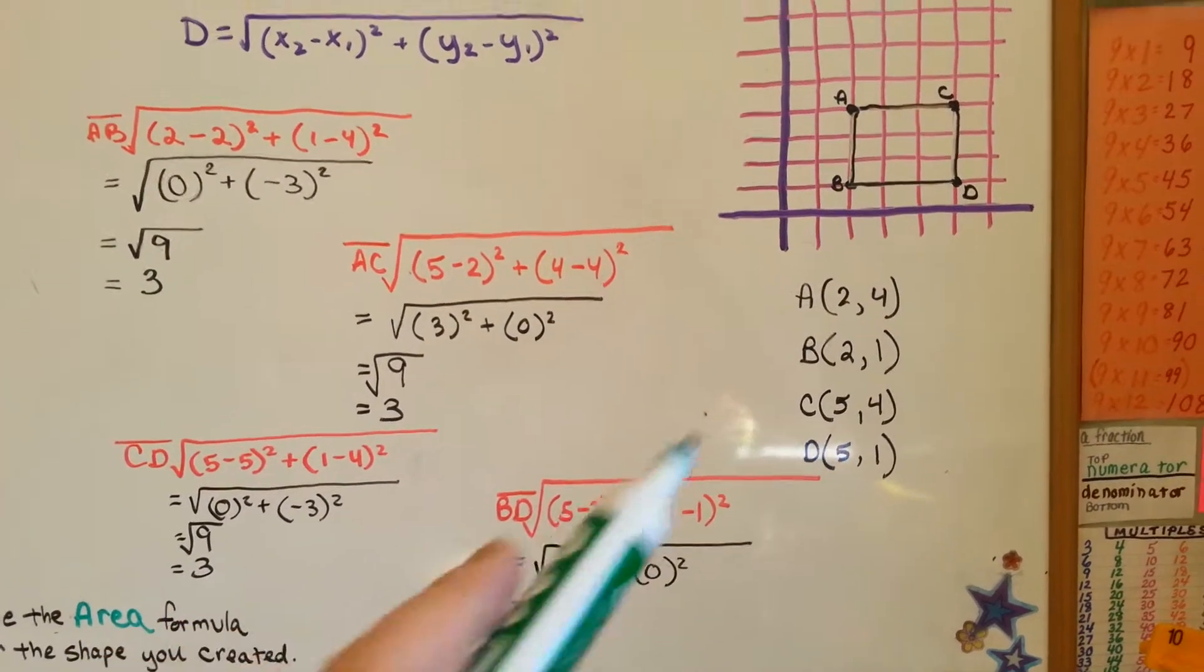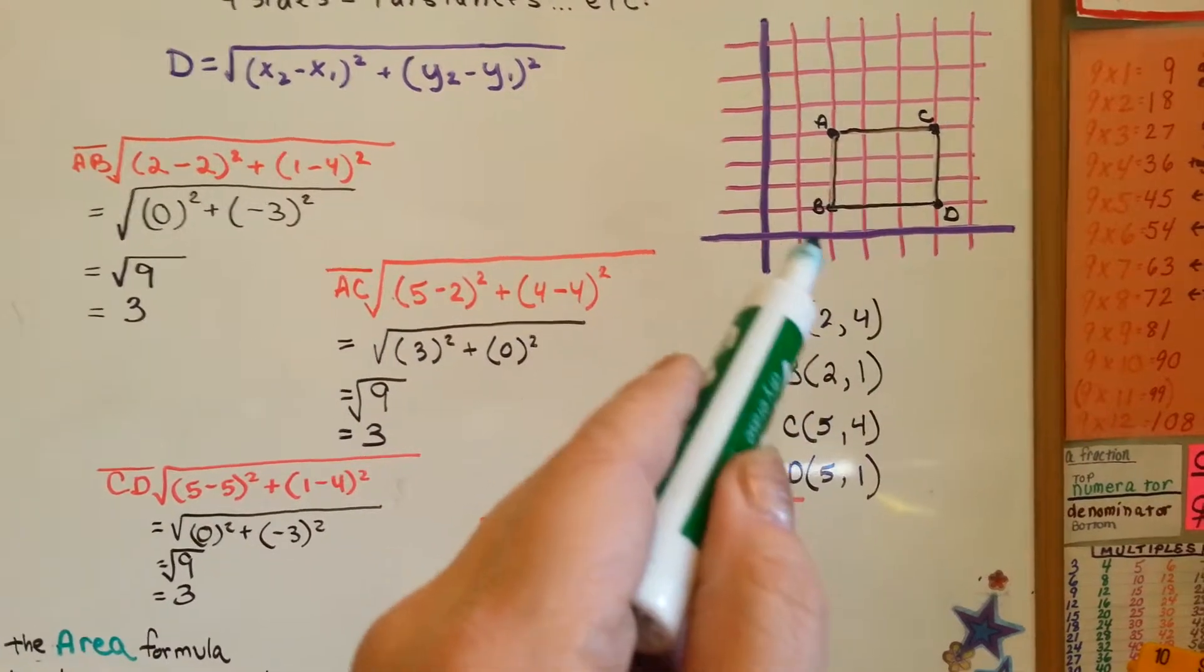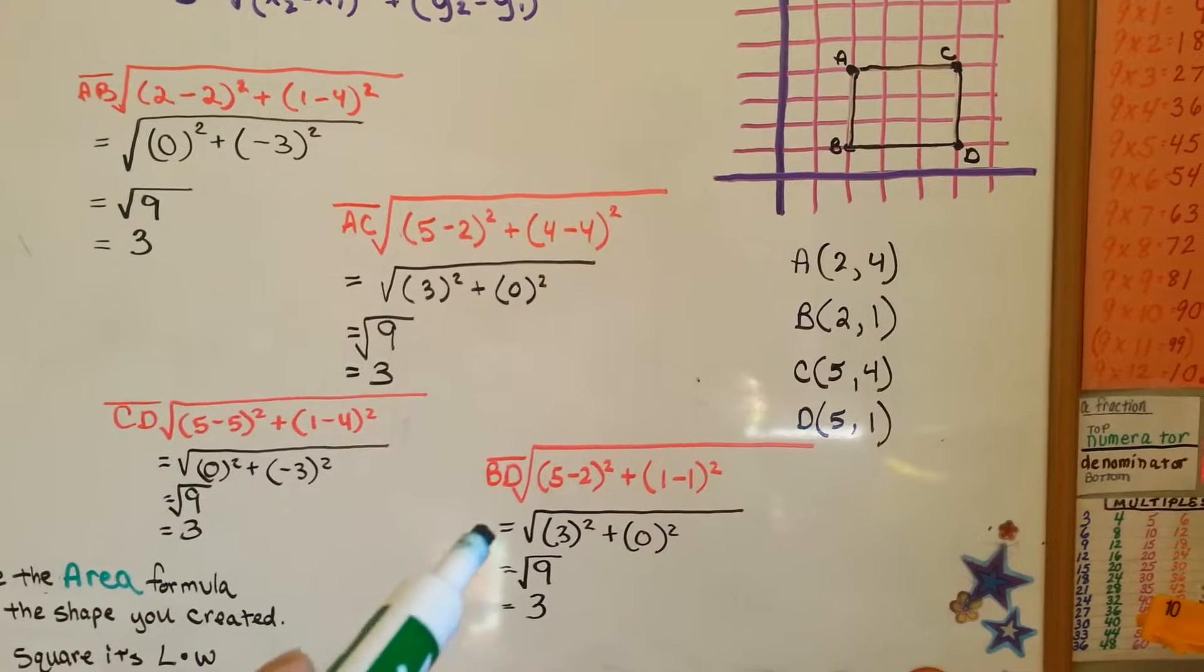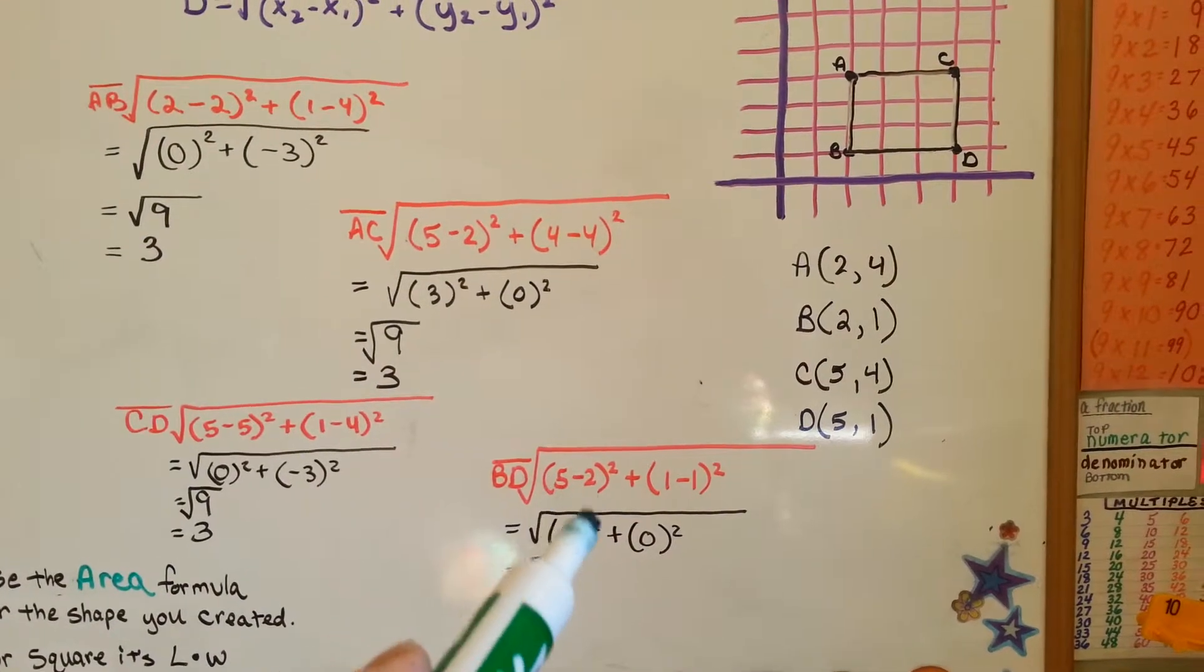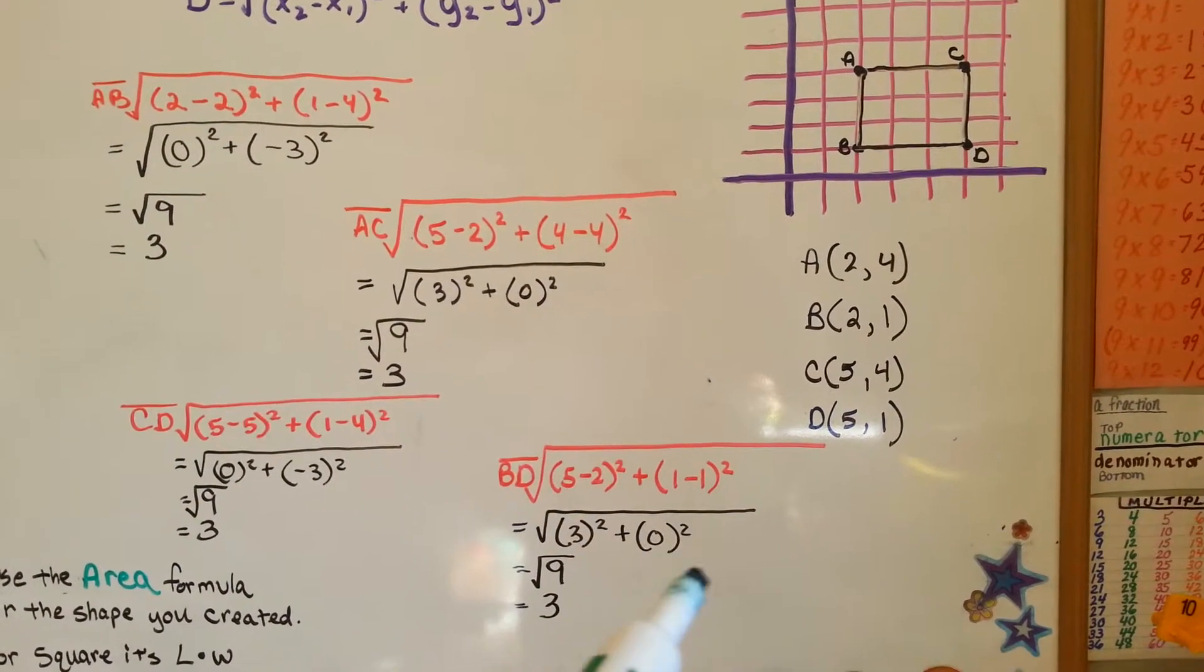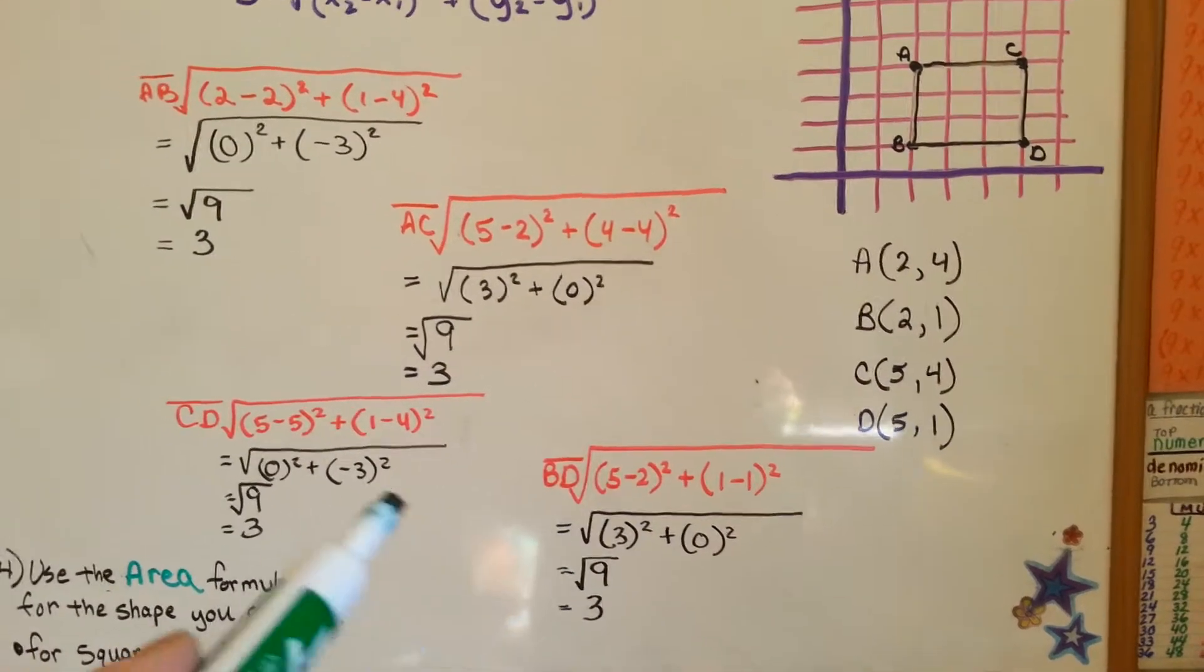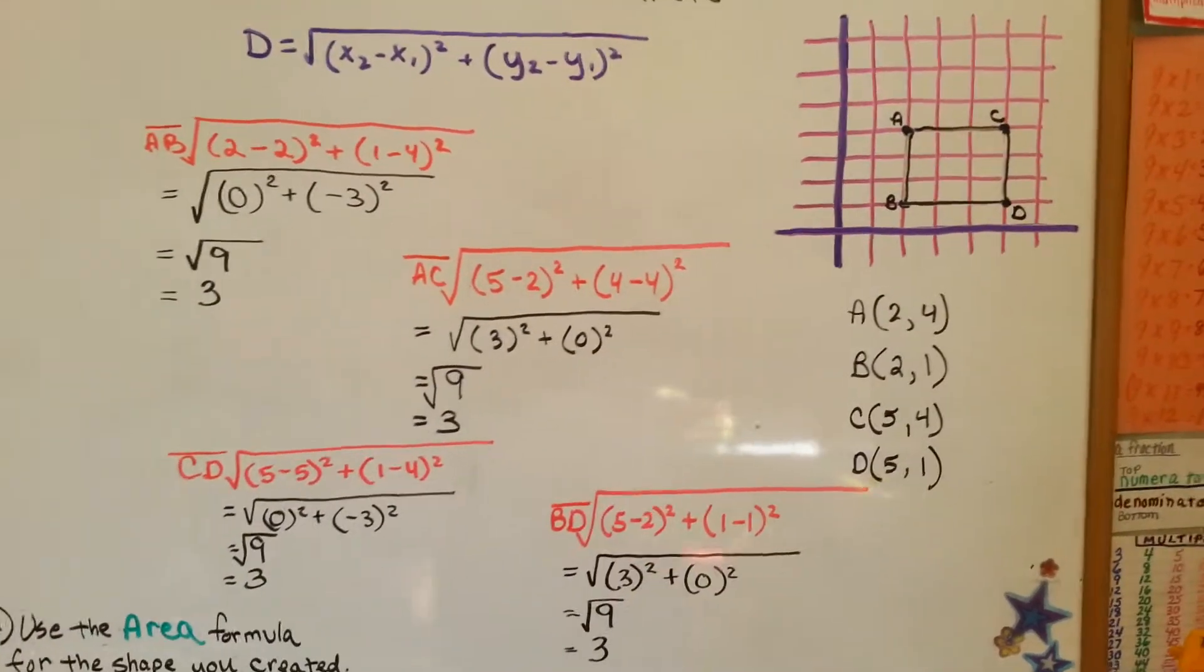Now, we're going to do BD, the bottom line, which is going to completely enclose our geometric shape to make a square. So, we do the same thing. 5 take away 2 is 3. 1 take away 1 is 0. 3 times 3 is 9. Square root of 9 is 3. So, now we got a bunch of 3's so we realized, oh, we made this square.